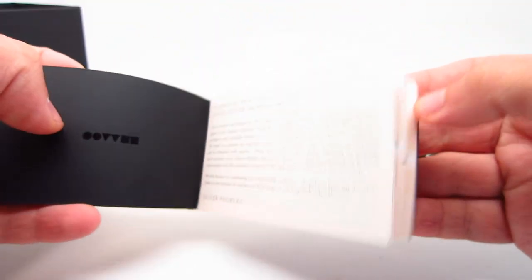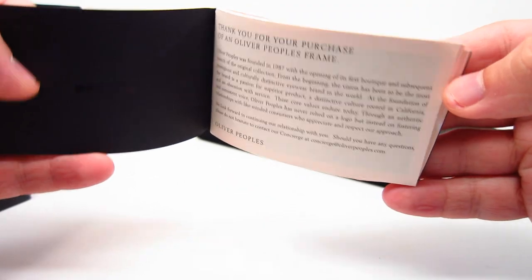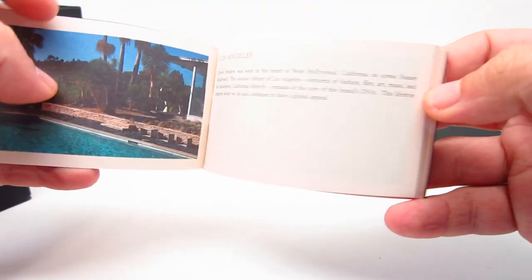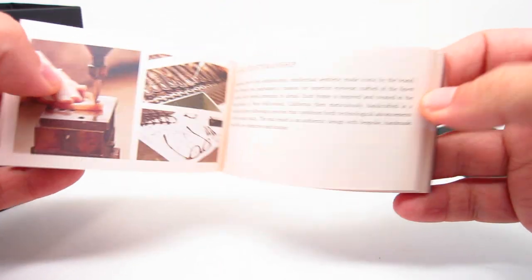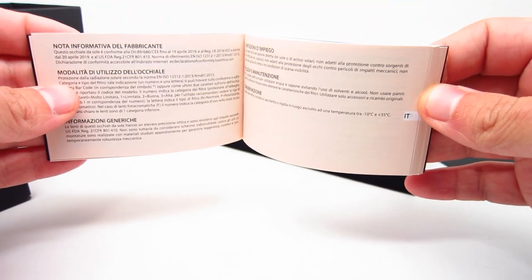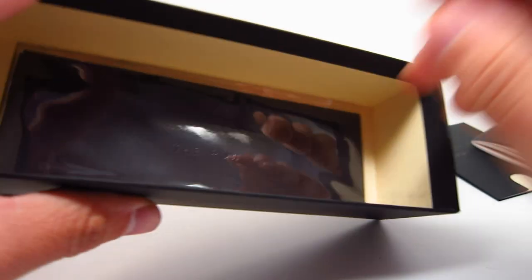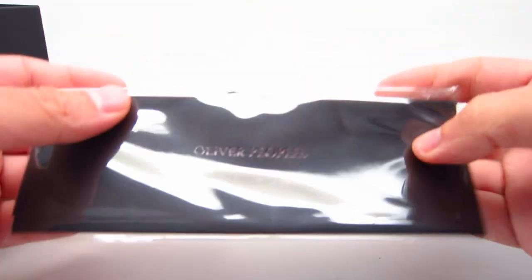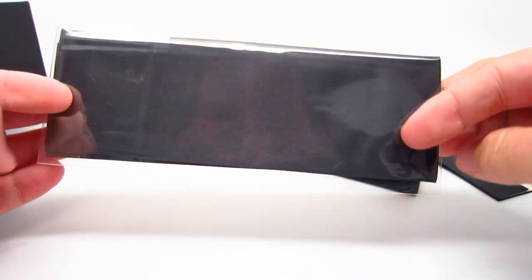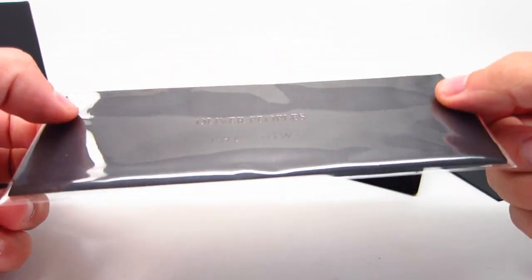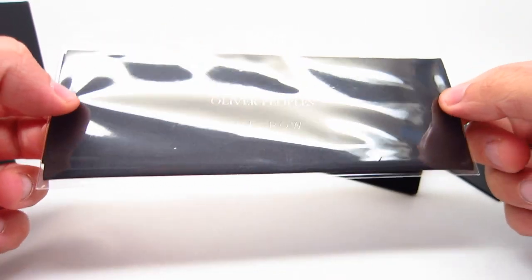And this booklet, that's kind of like the information booklet. Like thank you for choosing Oliver Peoples and some info. Like the craftsmanship. Not too important. And then you get a nice, quite big black cloth. It says Oliver Peoples the roll on them.